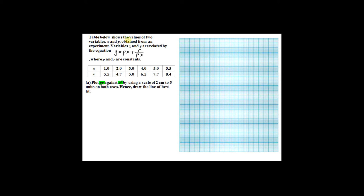The table below shows the value of two variables x and y obtained from an experiment. Variable x and y are related by the equation y equal to px plus r divided by px, where p and r are constants.